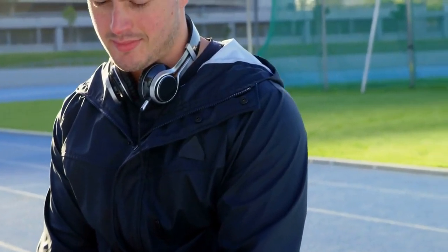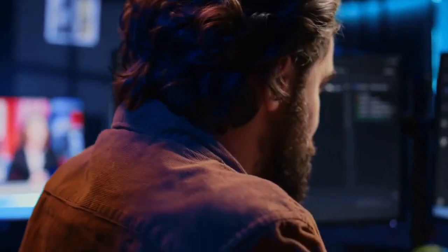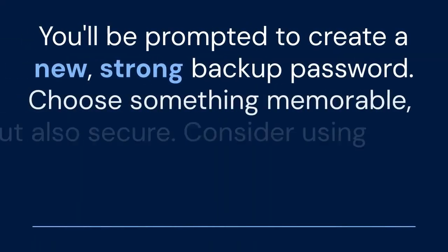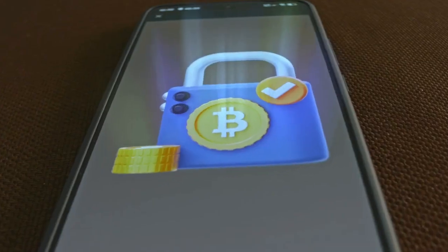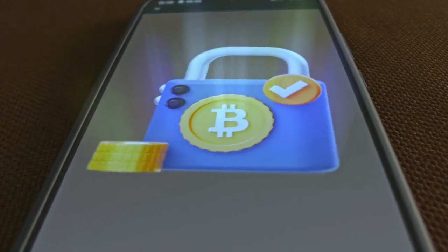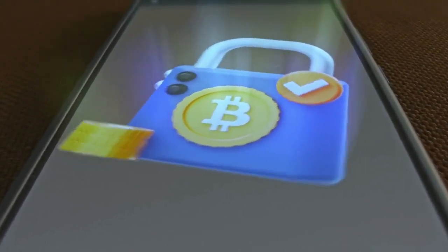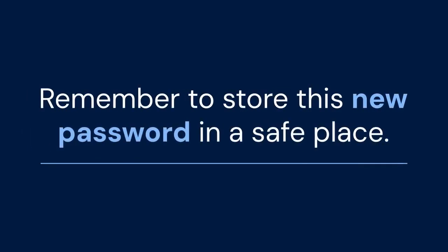Now, you can re-enable backups and create a new backup password. Go back to the settings menu and find the backup option again. This time, select Enable Backups. You'll be prompted to create a new, strong backup password. Choose something memorable but also secure. Consider using a password manager to store it safely. Confirm the new password, and Authy will then encrypt your data with the new password and upload it to their servers. Remember to store this new password in a safe place.